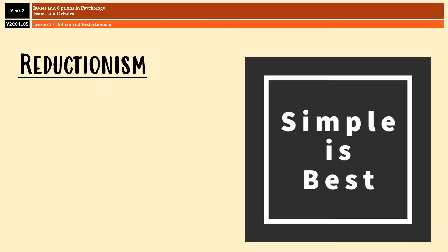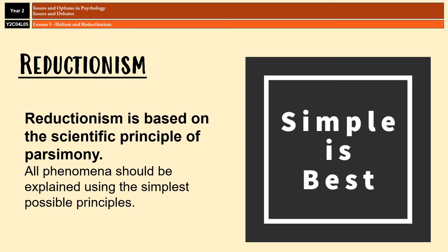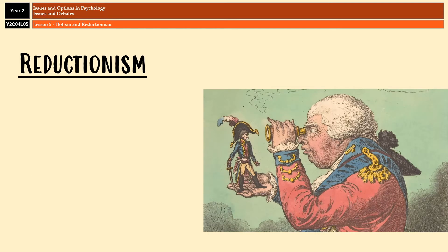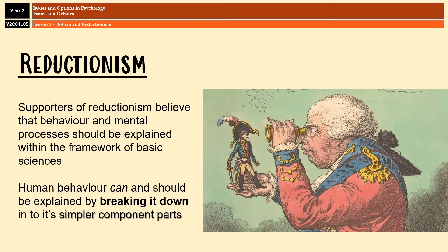Moving on to the other side of the debate, which is reductionism. Reductionism is the idea that all phenomena should be explained using the simplest principles possible, which is known as parsimony. According to this approach, human behavior can and should be explained by breaking it down into its component parts, and all explanations should take place within the basic framework of science. For example, reductionist approaches would suggest that there's no need to investigate all aspects of a person to work out why they have depression, when you can focus on just one thing, such as levels of serotonin, and then treat the depression using antidepressants.